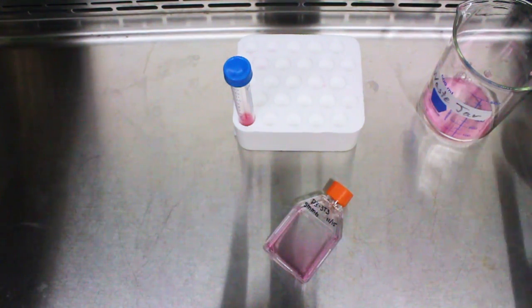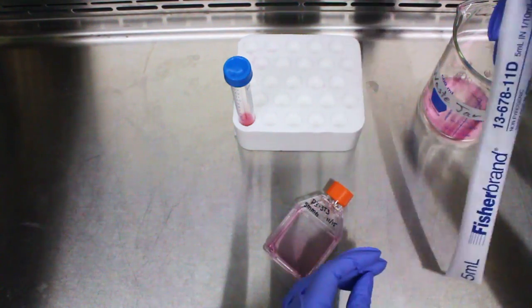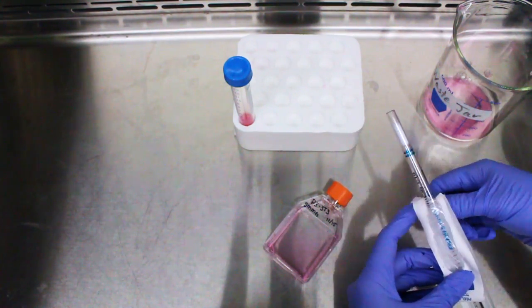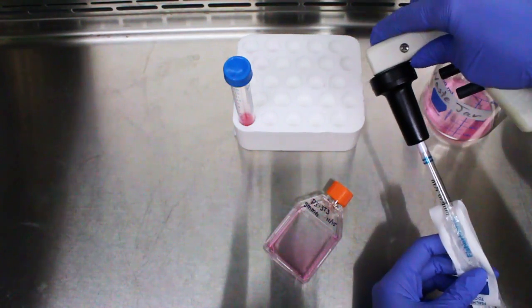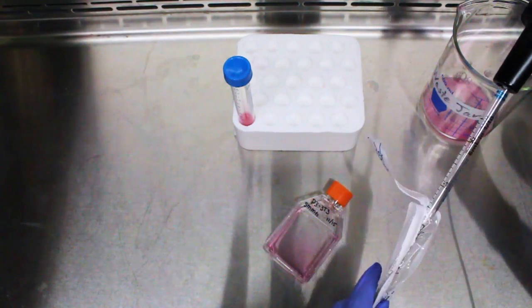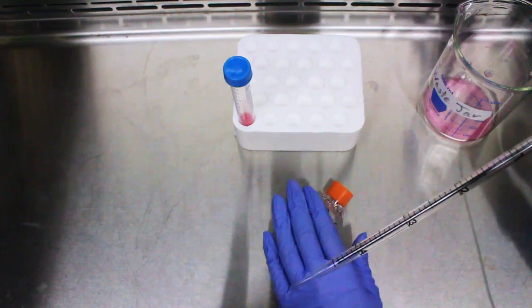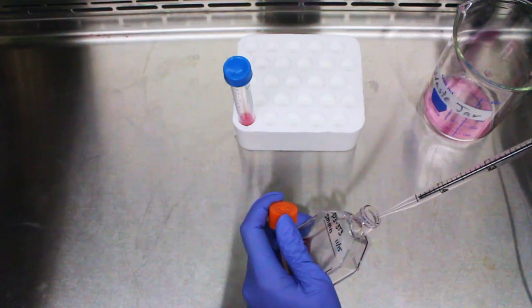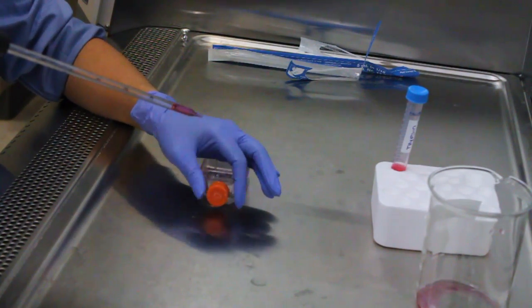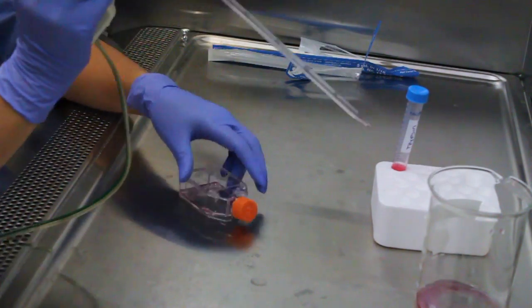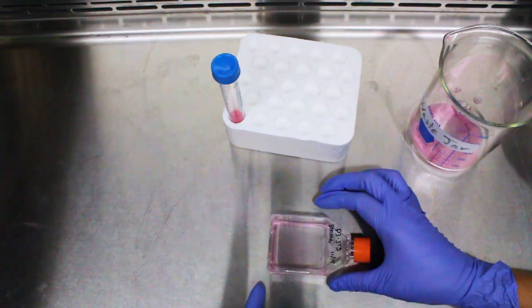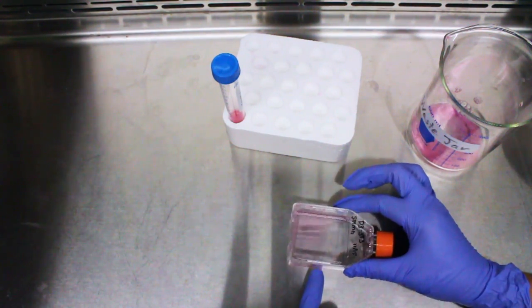After 10 to 40 seconds, remove 1ml of trypsin prior to cell detachment. After leaving trypsin in for about 10 minutes, tap the flask against your finger to make sure that they fully detach.